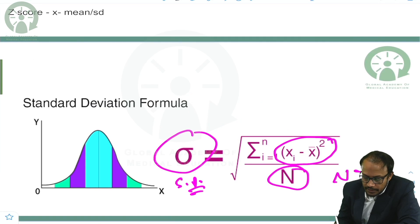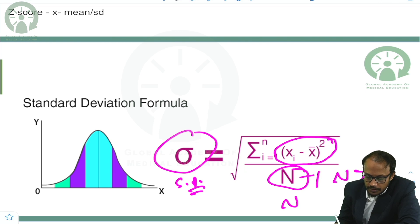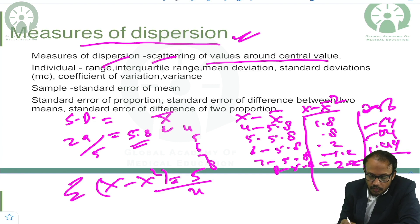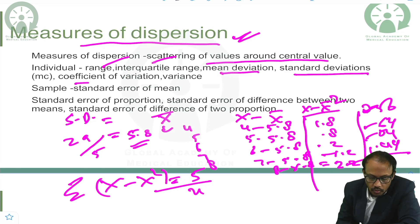If n is greater than 30, then we use n in the denominator. If it is less than 30, then we use n minus 1. The measures of dispersion include range, interquartile range, mean deviation, standard deviation, coefficient of variation, and variance.